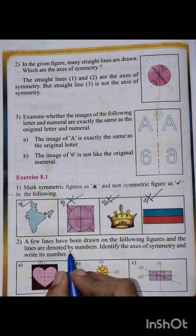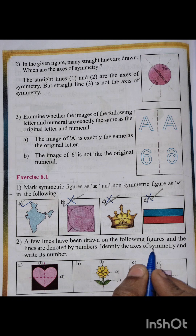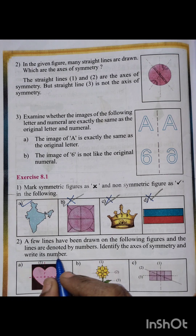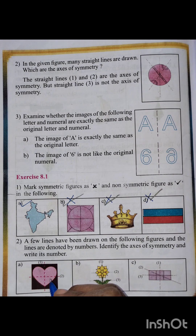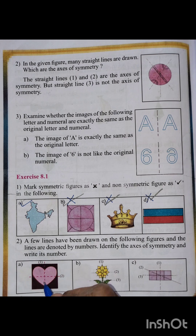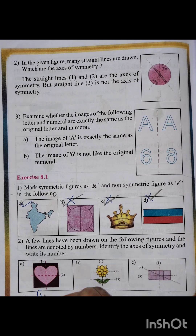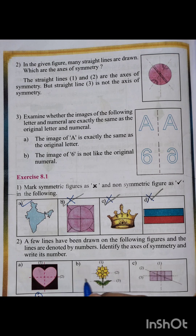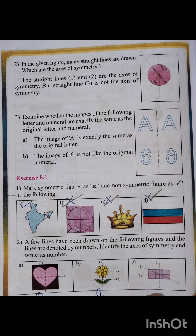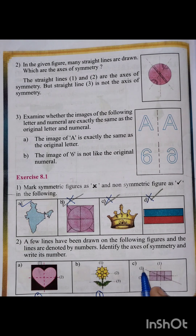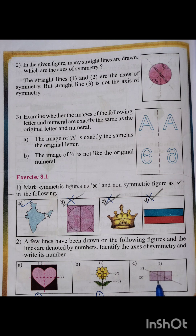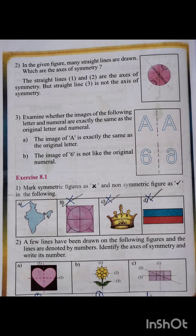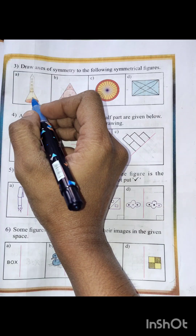Second question: a few lines have been drawn on the following figures and the lines are denoted by numbers. Identify the axis of symmetry and write its number. In the first figure, line one is the axis of symmetry; line two is not. In the second figure, line one is the axis of symmetry. In figure C, lines one and three are the axes of symmetry.